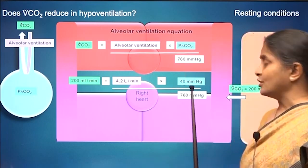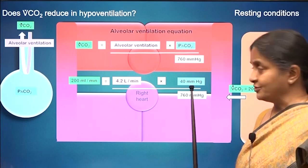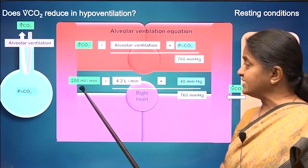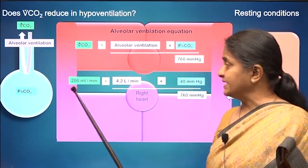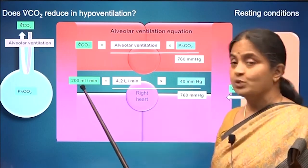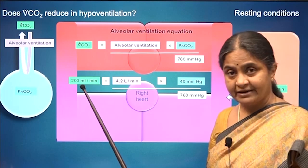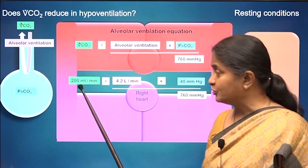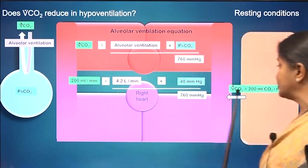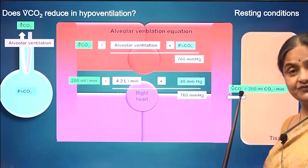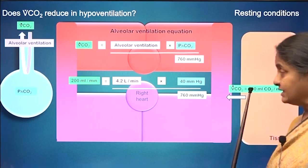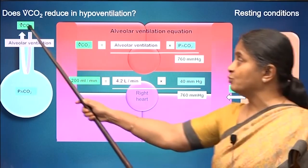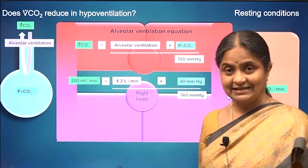If alveolar CO2 is 40 millimeters mercury, we see that the volume of carbon dioxide exhaled is 200 ml per minute. That is how we would know how much carbon dioxide is formed in the tissues, because that is exactly what is exhaled.